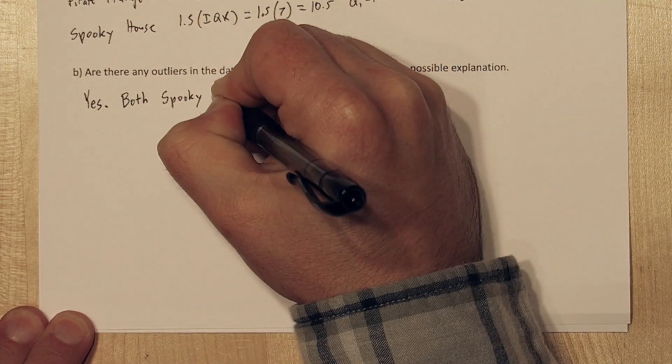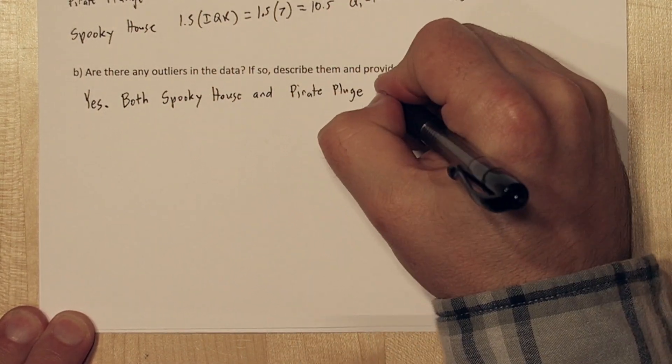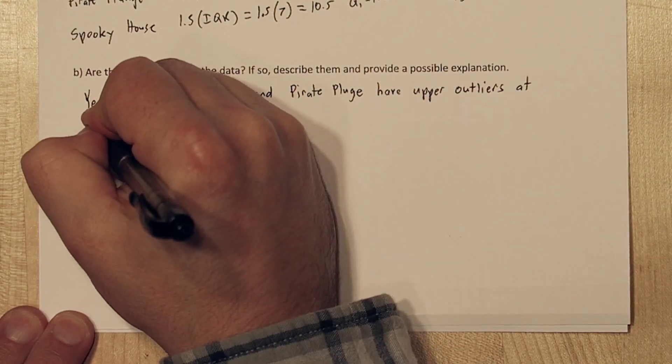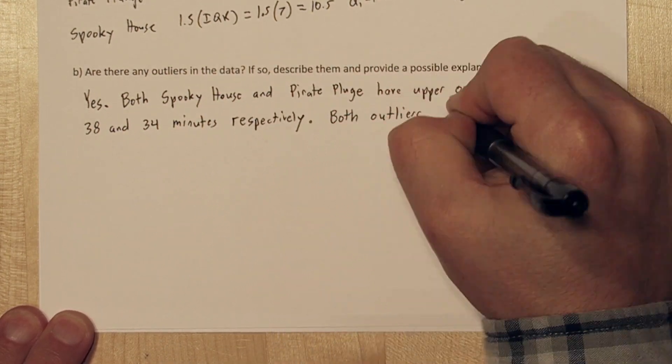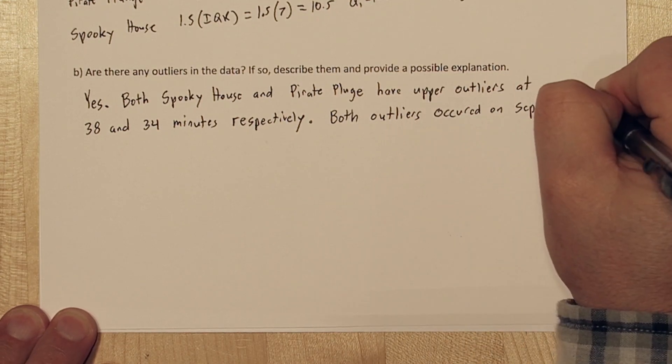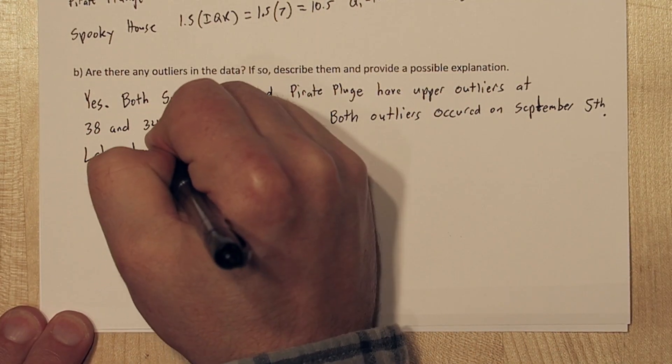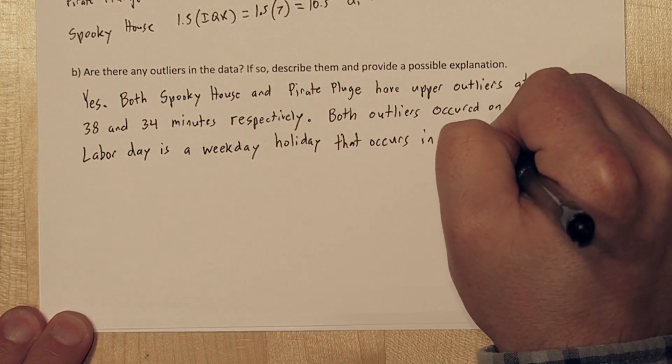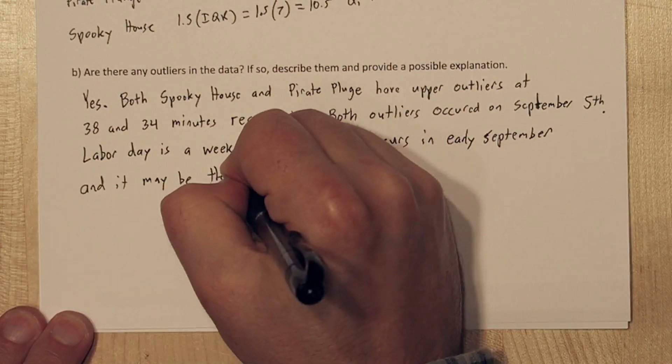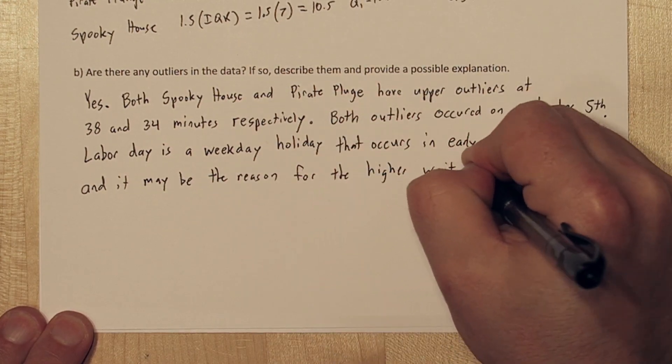Now in part A we found outliers, so we're going to say yes. Both Spooky House and Pirate Plunge have upper outliers at 38 and 34 minutes respectively. Both outliers occurred on September 5, so I'm thinking Labor Day is a weekday holiday that occurs in early September, so it may account for the reason there was higher wait times on September 5.